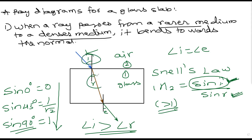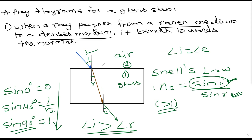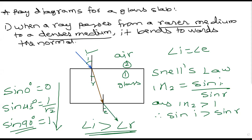Always remember: the angle is measured with respect to the vertical — the normal — not the horizontal. In an exam, if they give you 60° with respect to the surface, the angle of incidence is 90° minus 60° = 30°. The angle of incidence, refraction, or emergence is always the angle between the ray and the normal.